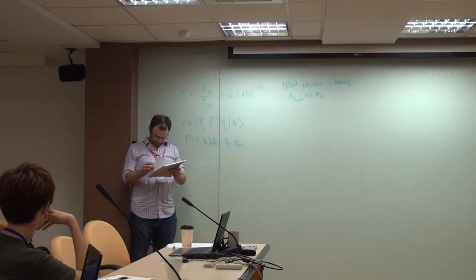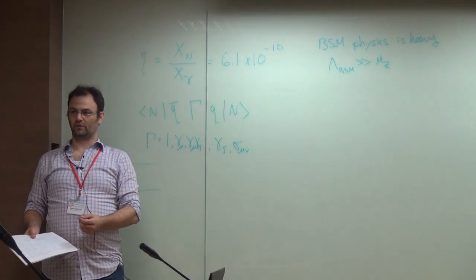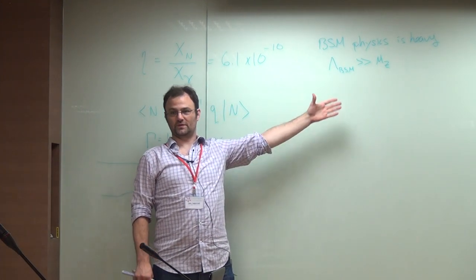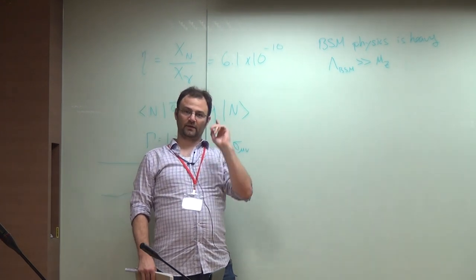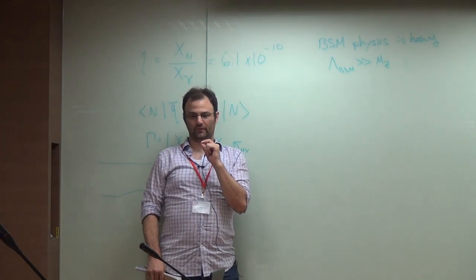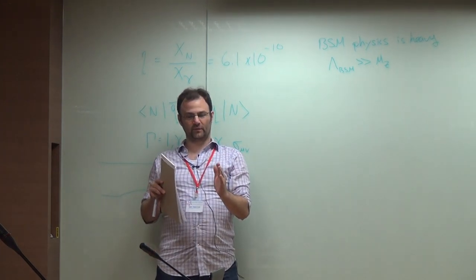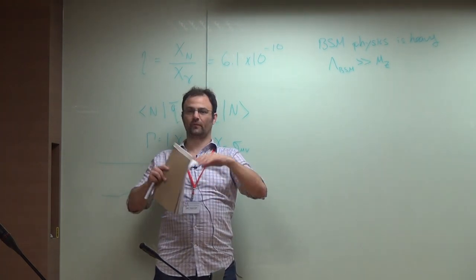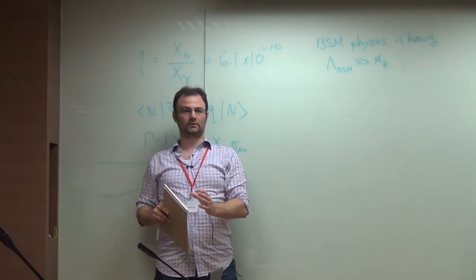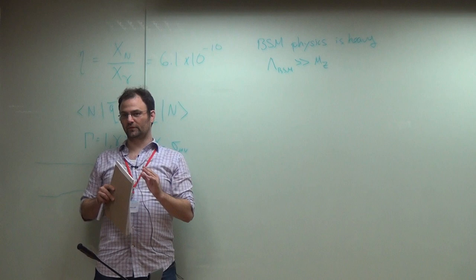We want to understand the standard model and how BSM physics might interact with it, which means we have to solve QCD. Lattice QCD is not a model — that's the most important thing to take home from these lectures. Lattice QCD is the only non-perturbative regularization scheme we know of that is systematically improvable. Unlike any other attempt to solve QCD in the infrared regime, it is systematically improvable.